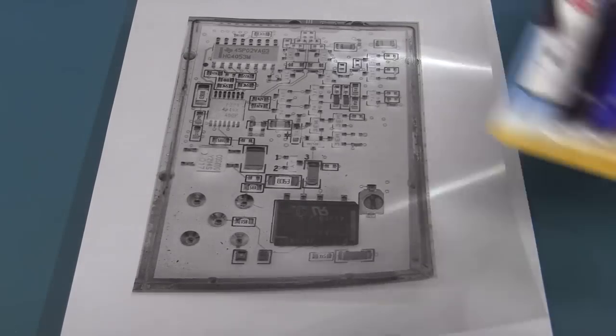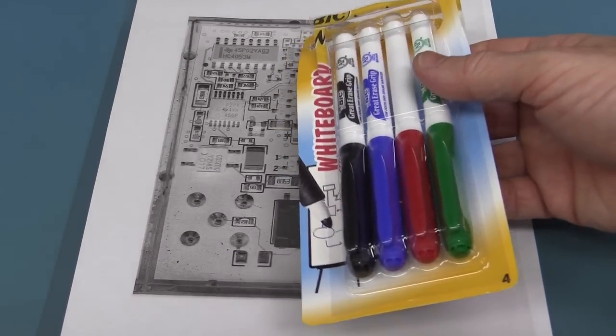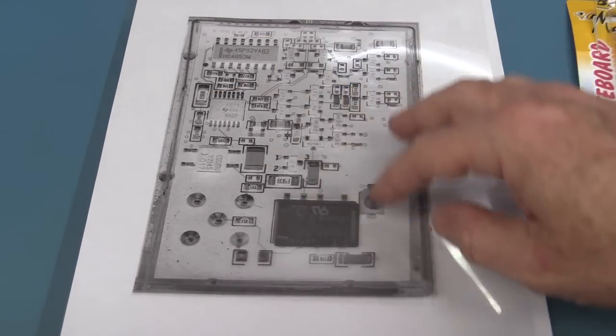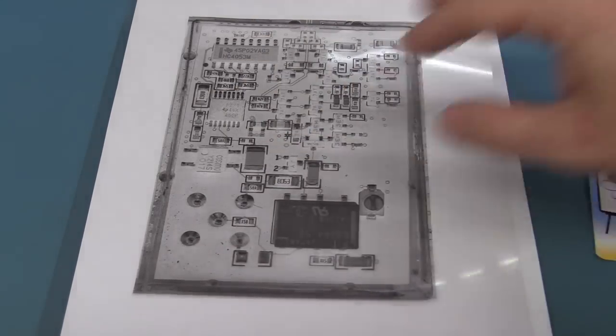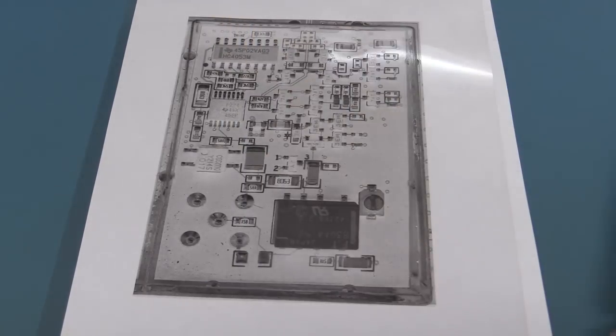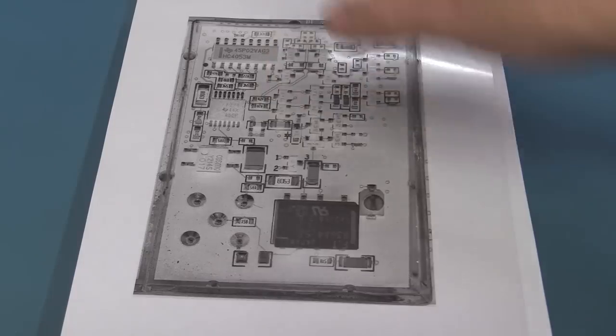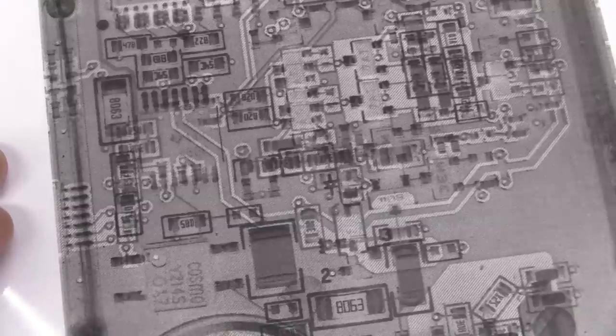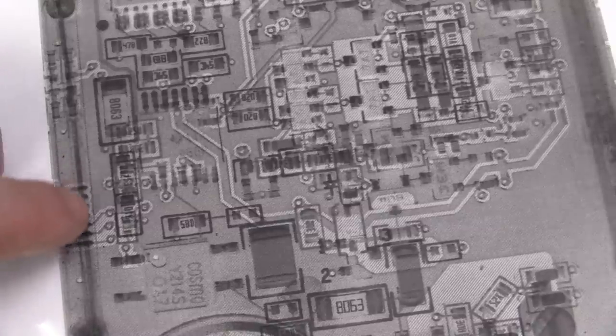The good thing about transparencies like this is that you can now come along with some whiteboard markers or highlighters and you can highlight all the traces one by one as you do them in different colors. You could have all your ground in green and your positive rail in red and all that sort of stuff. So you can really make sure you don't miss anything.